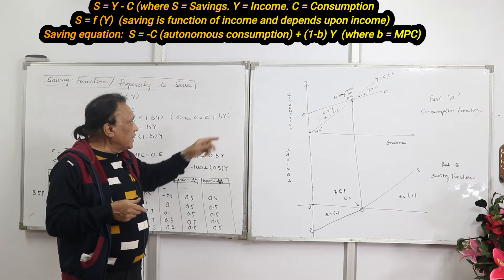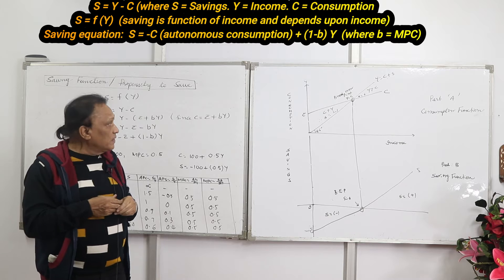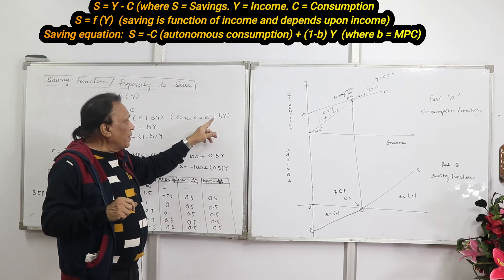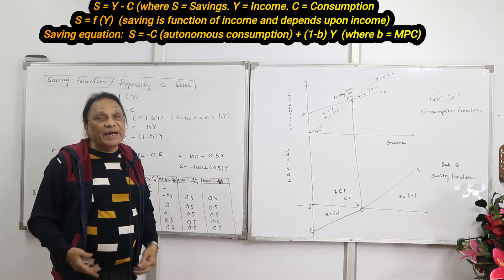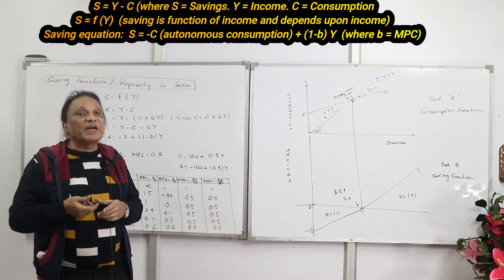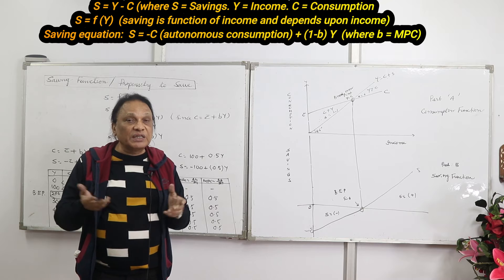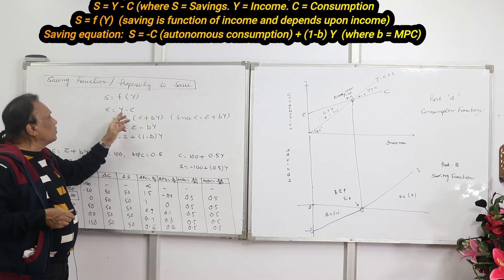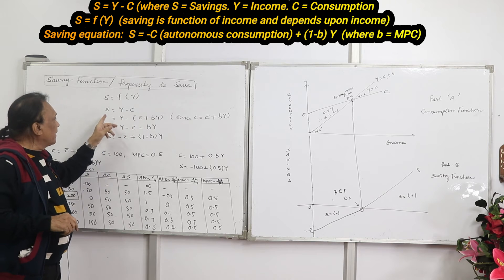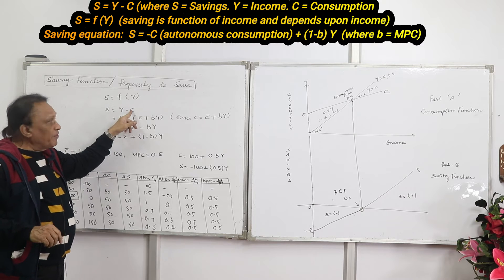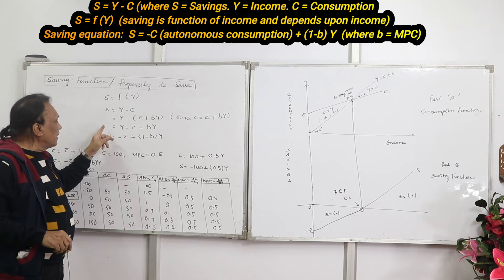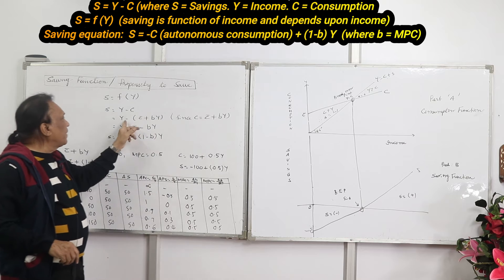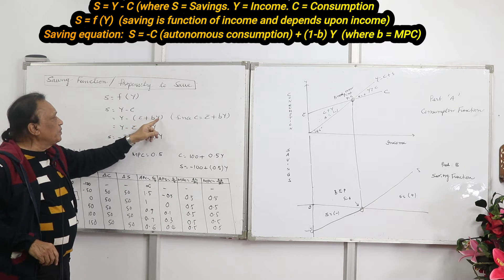MPC is ΔC/ΔY, and Y stands for income. This equation means our consumption at any given level of income equals C̄ — the minimum consumption required — plus MPC times income as income increases. The slope of the consumption function is MPC. Now we substitute this into S = Y − C: S = Y − (C̄ + bY), which gives us Y minus C̄ minus bY.